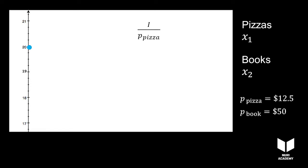Likewise, you can buy a thousand over the price of pizzas if you spend all of your money on pizzas and buy zero books.